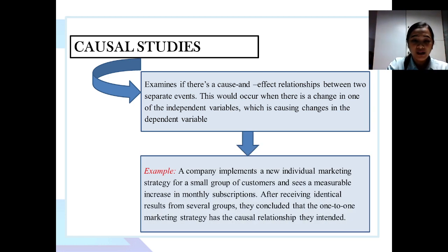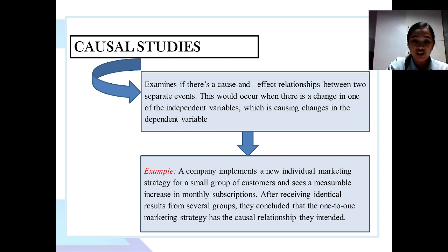For example, a company implements a new individual marketing strategy for a small group of customers and sees a measurable increase in monthly subscriptions. After receiving identical results from several groups, they concluded that the one-to-one marketing strategy has the causal relationship they intended.